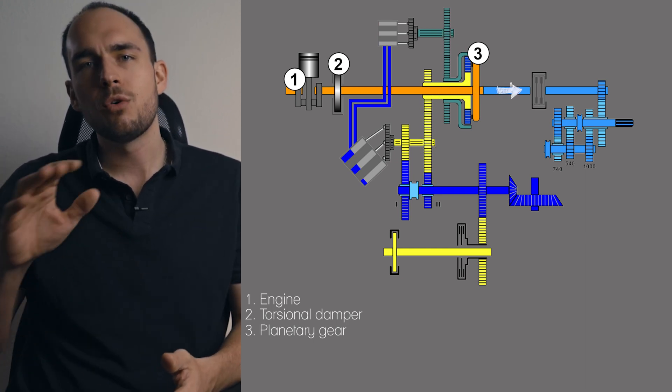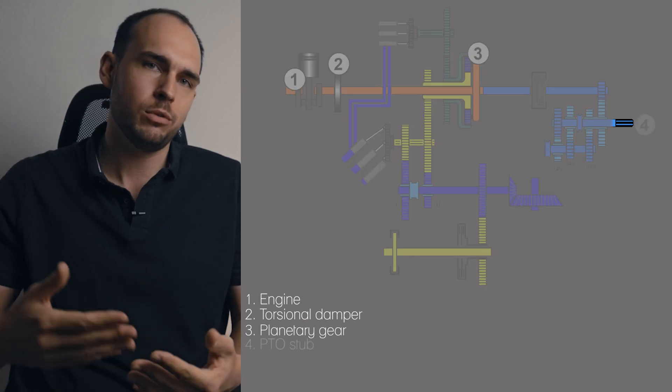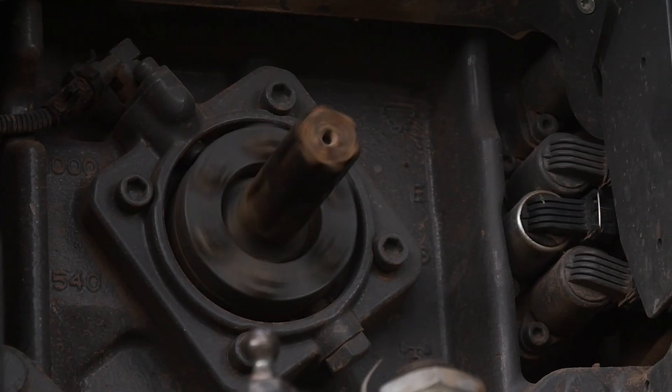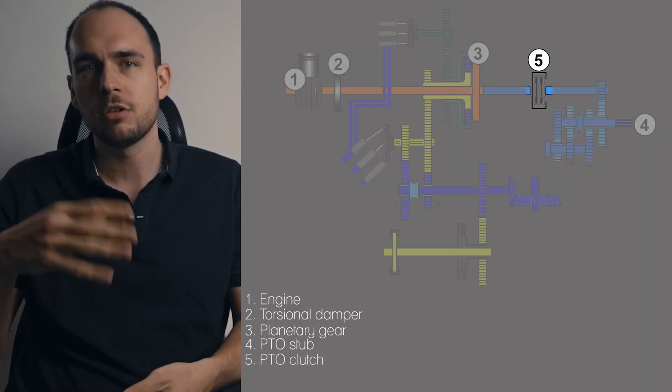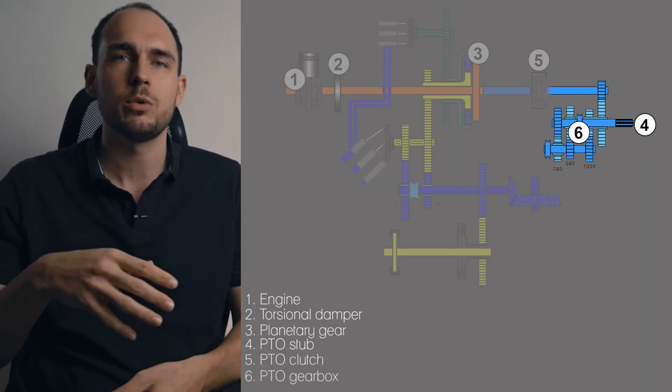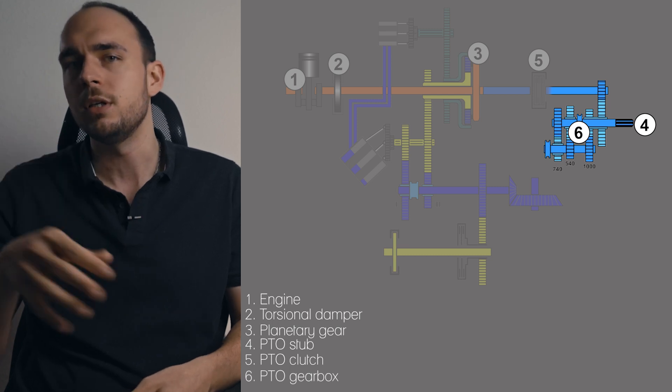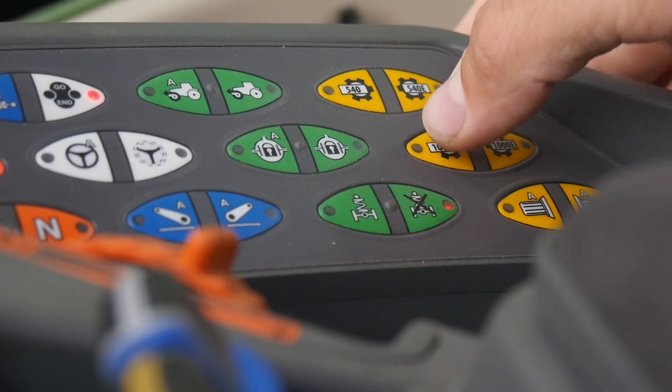On the far right we have the PTO stub so to speak which comes out of the back of the tractor and in front of that there is a PTO clutch which provides a frictional connection and the PTO gearbox which is used to set the various PTO speeds of 540, 1000 and so on.